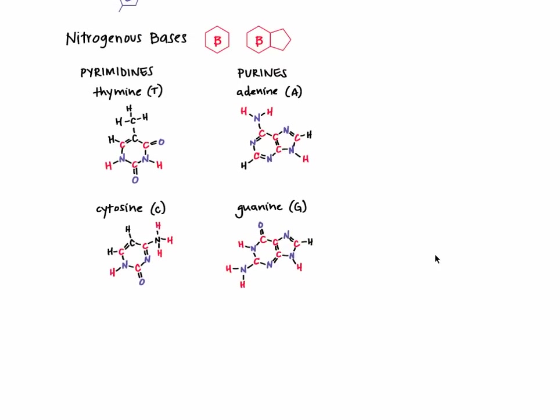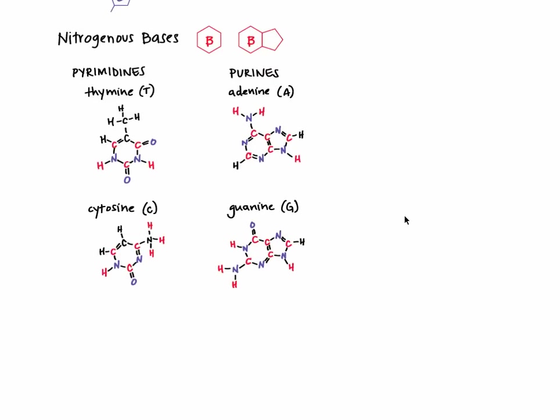Now, let's think about the nitrogenous bases that project off this backbone. The sequence of these nitrogenous bases is really important because this is what encodes your genes. In DNA, there are four different nitrogenous bases: thymine, cytosine, adenine, and guanine, which are usually abbreviated T, C, A, and G.